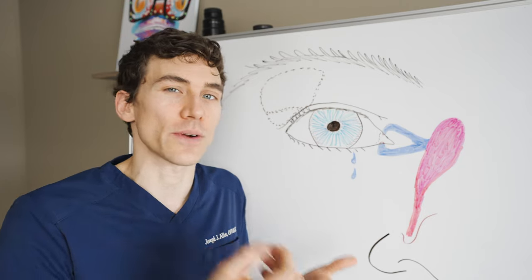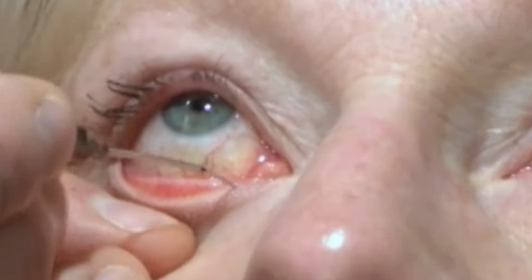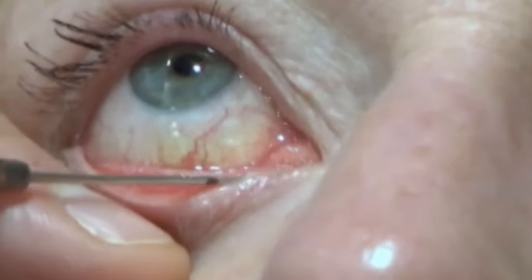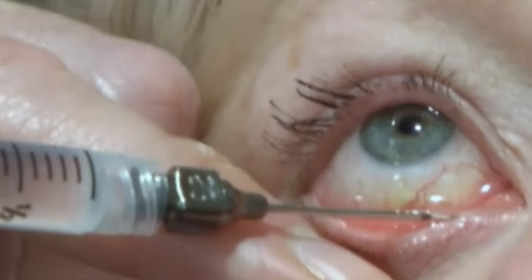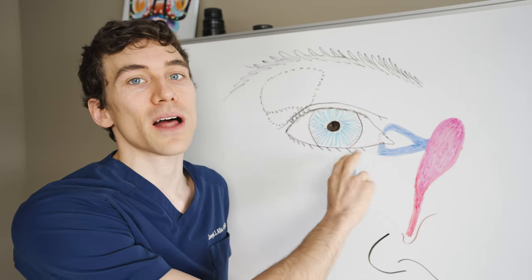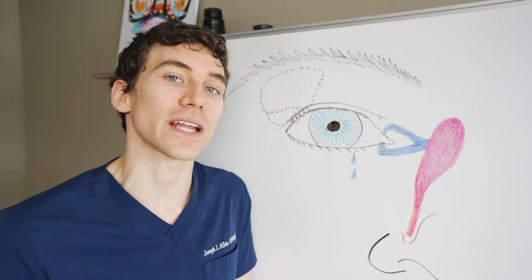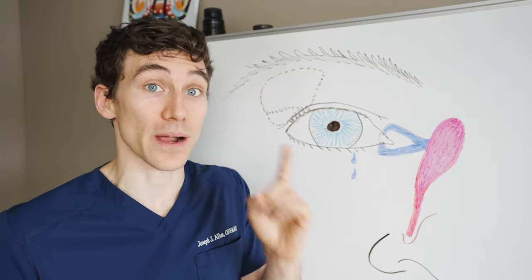And then if your doctor is concerned that there is a blockage, they can do what's called a dilation and irrigation, where we use an irrigating solution and basically pump that through the nasolacrimal system so that saline solution drains and you can taste in the back of your throat. Oftentimes if there is a blockage, the irrigation solution will basically push that blockage down and through the drainage canal, and it opens up and basically solves your problem.